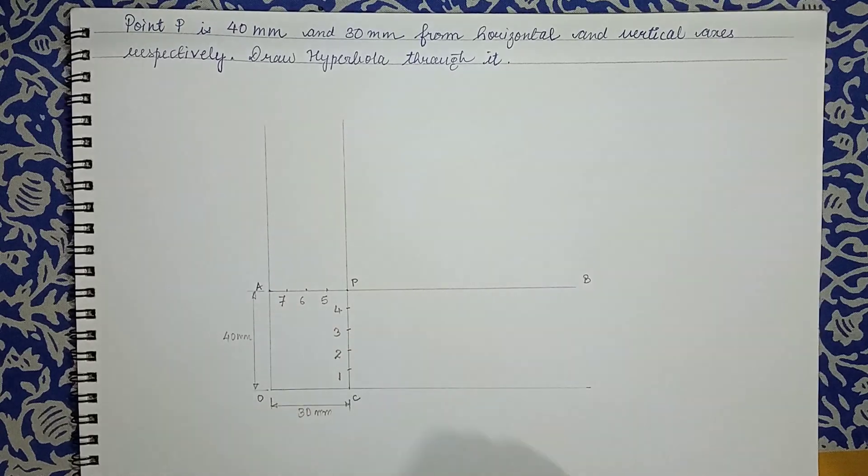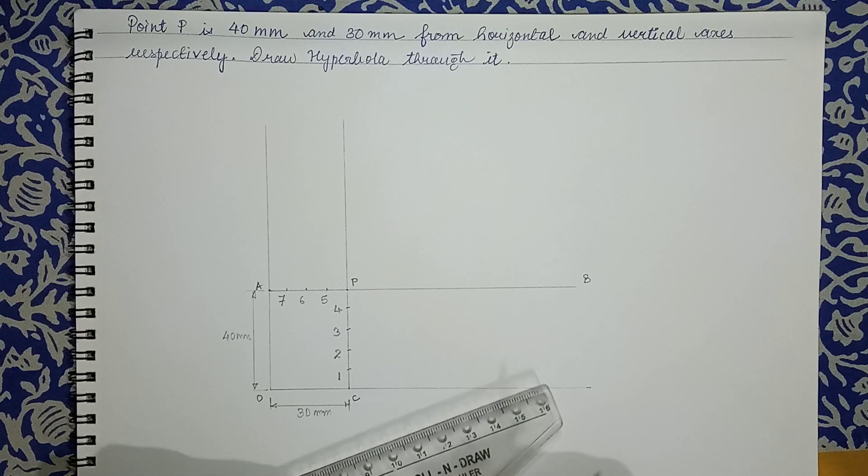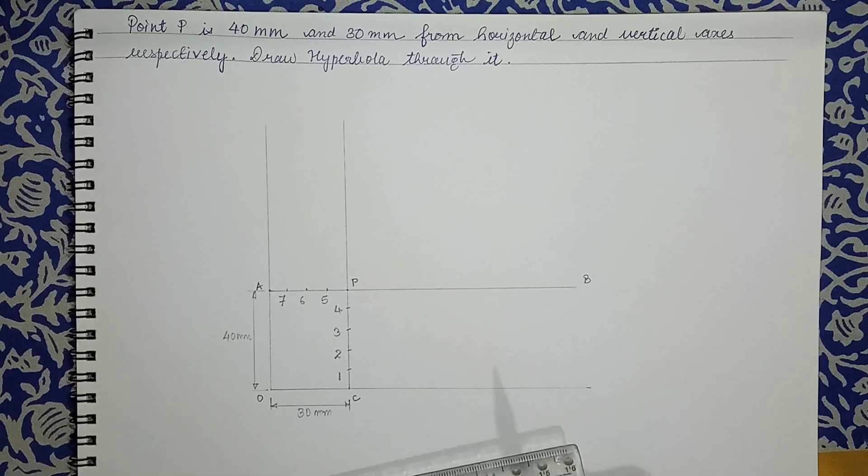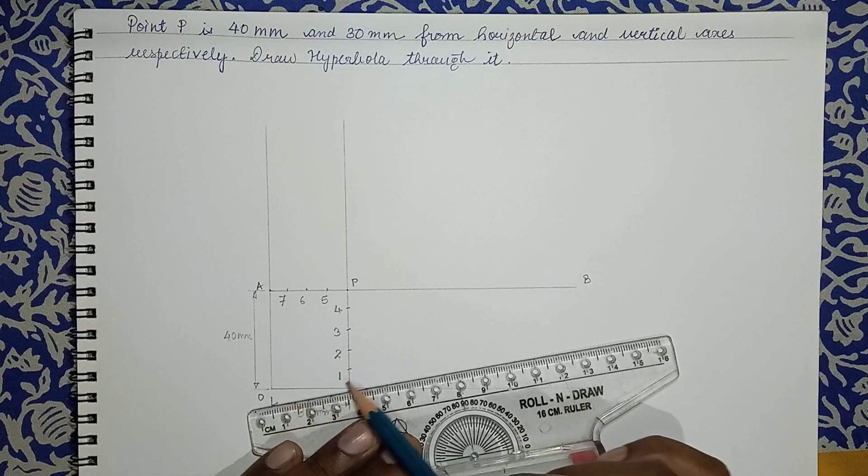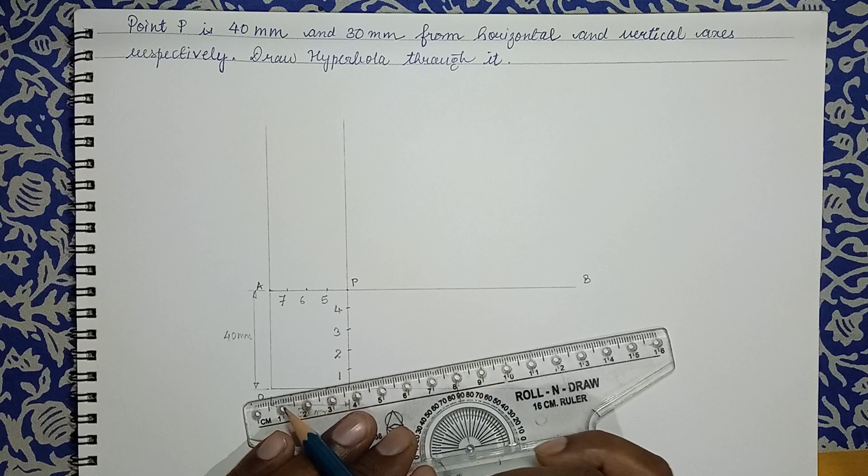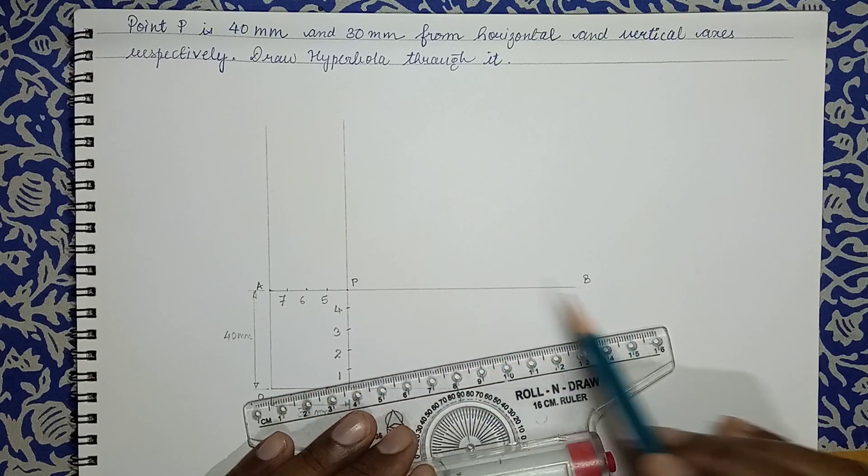And now I draw a line such a way that it passes to point 1 and it is extended to this line PB. Similarly from point O to point 2, and it is extended to line BP.